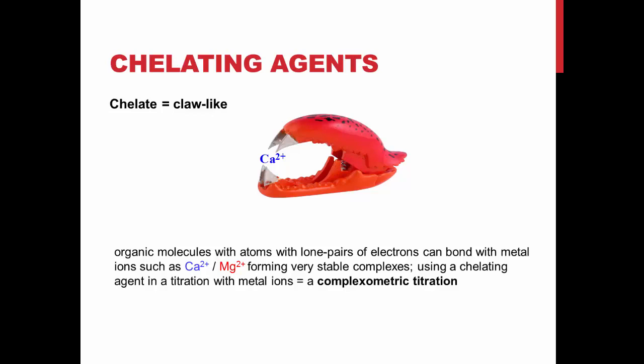The word chelate comes from the Greek word for claw-like. They are claw-like because the chelating agents have lone pairs of electrons that bond with divalent metal ions, such as calcium and magnesium. If you remember, divalent means that it has a valence of two. These divalent metal electrons form very stable complexes with chelating agents. Again, when using a chelating agent in a titration with metal ions, it is called a complexometric titration.